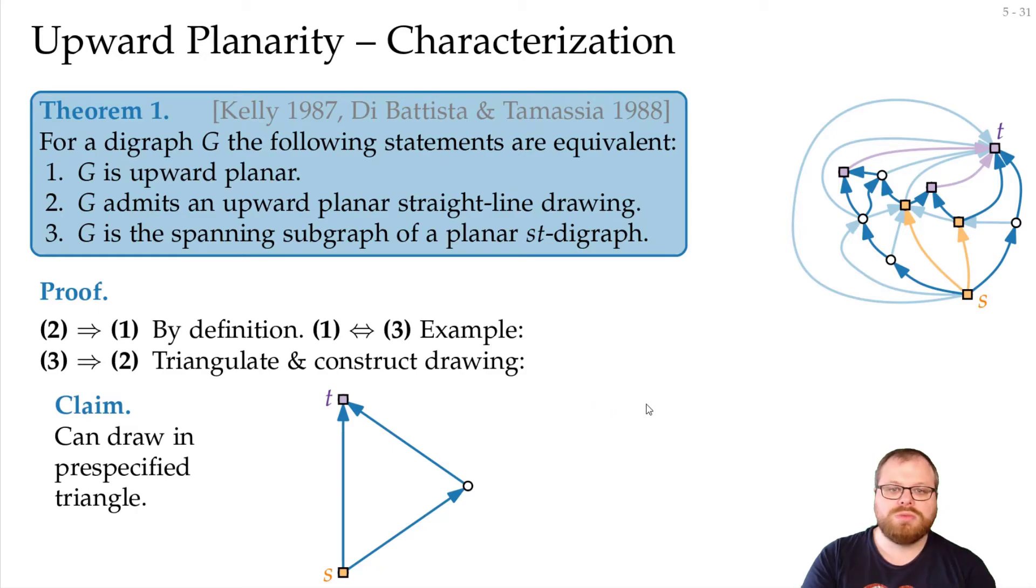Now let's assume that for all upward planar graphs, up to some number of vertices, we have proven the statement. And we want to go to one larger. So we do induction on the number of vertices. We now want to have a look at a single interior vertex. There are some incoming edges, and some outgoing edges. And around the vertex all the faces must be triangles, so the neighborhood must look like this.